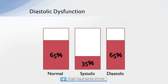In systolic failure, that's the inability to make a forceful contraction, so the amount of blood pumped out goes down — maybe to around 35%. If 65% of the blood stays in the heart and doesn't get pumped out while more blood is rushing in, it's going to back up into the lungs and into the periphery. The other thing that can happen is diastolic dysfunction.